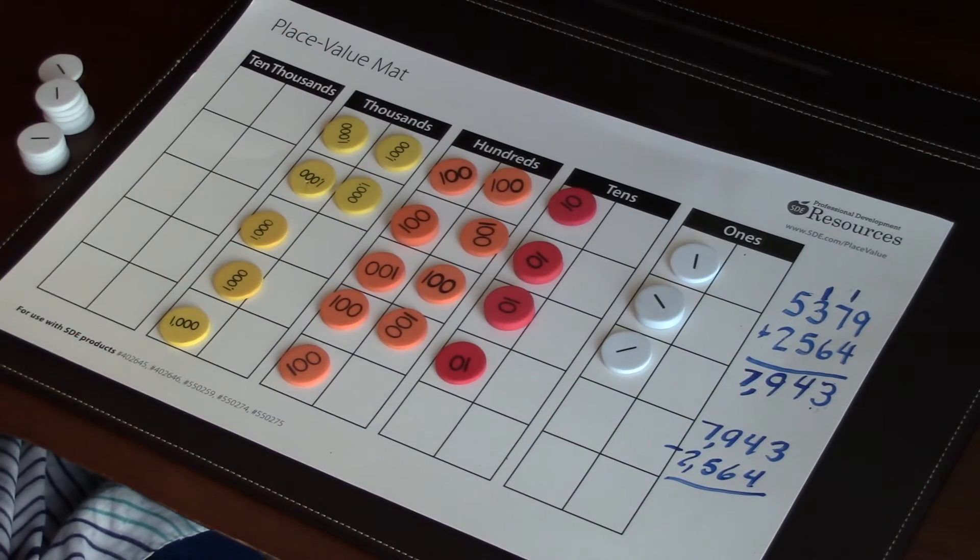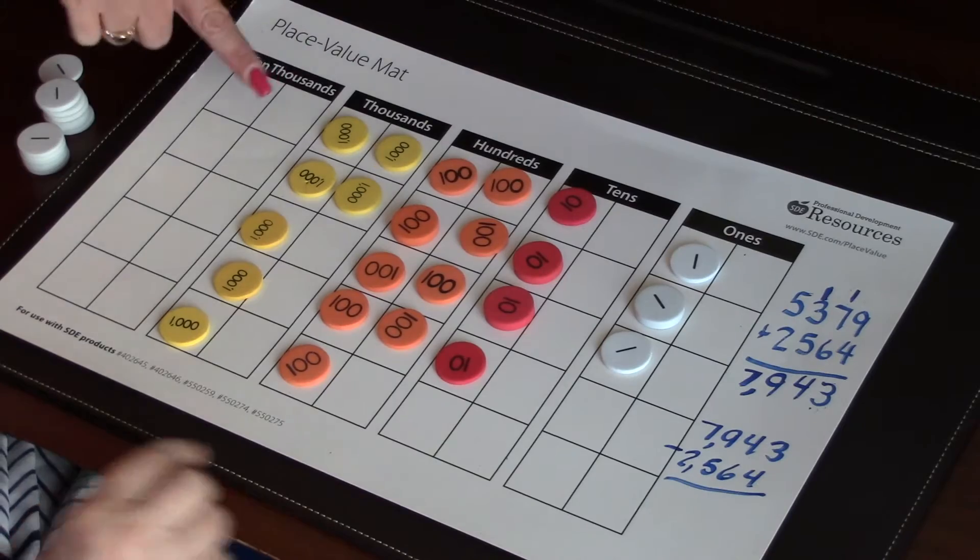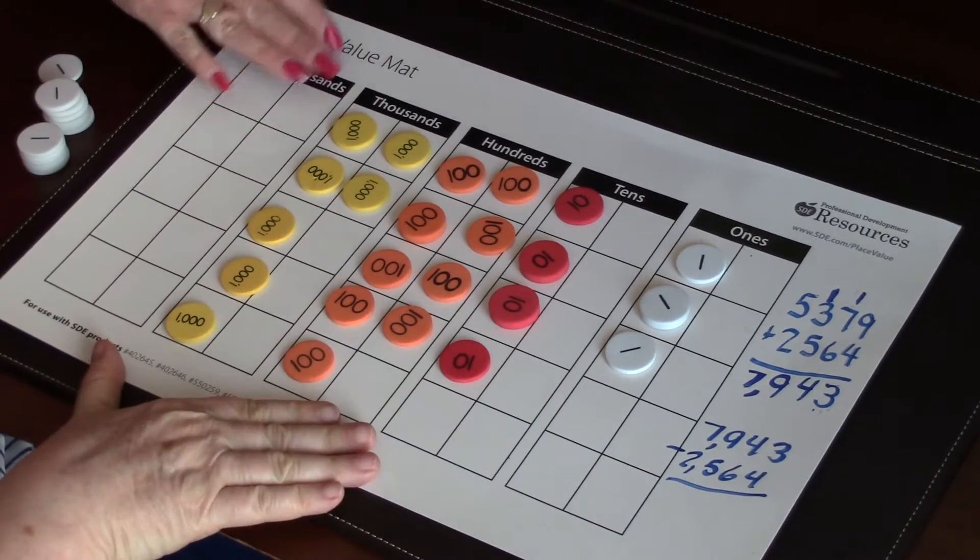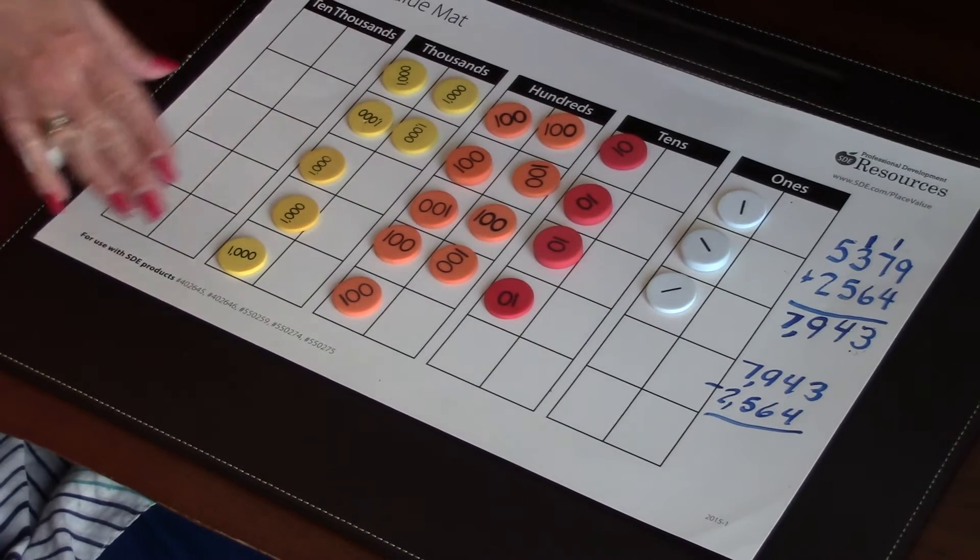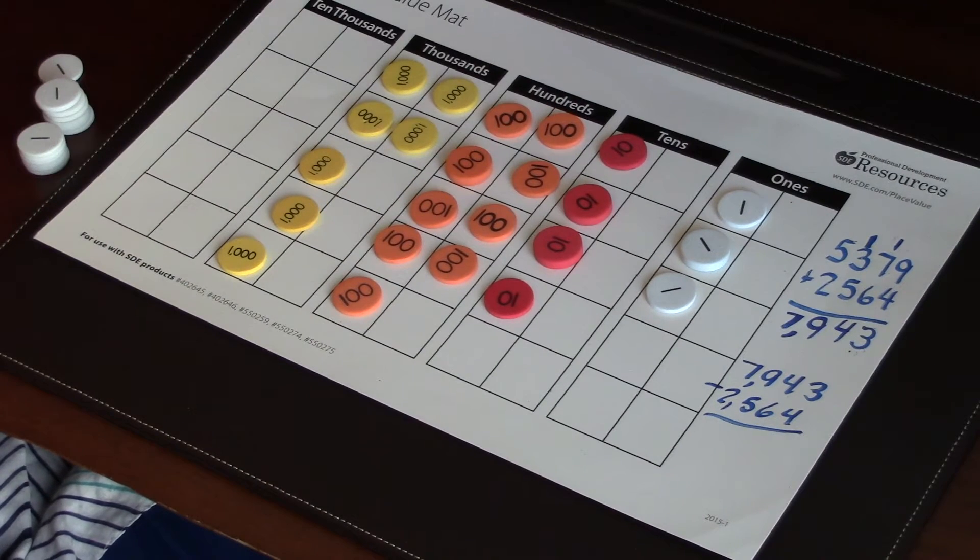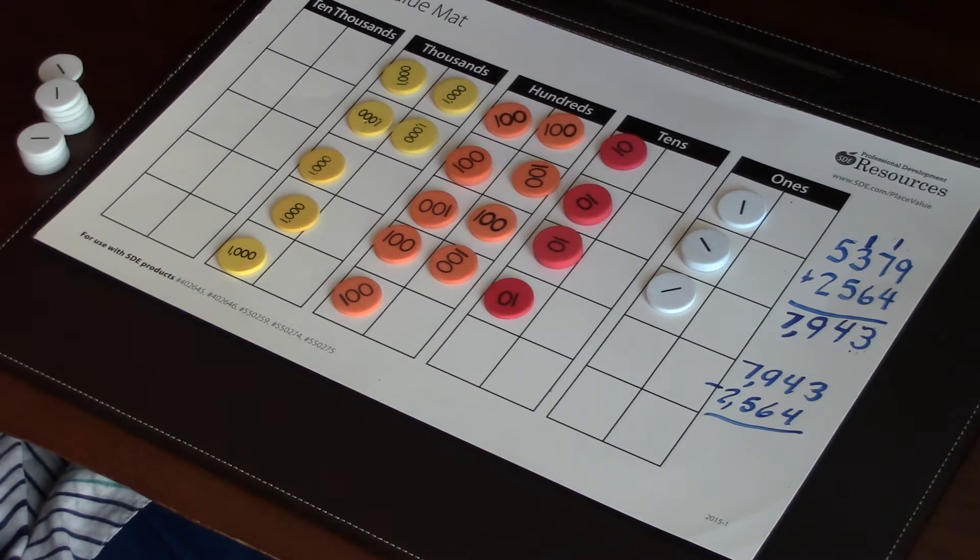Now, the difference with subtraction is that the child is going to build the whole, which is already built here from doing our addition problem. I'm going to slide this up just a little bit. And then what they're going to do is use their place value strips to get the value of the part and show that in expanded form down here.